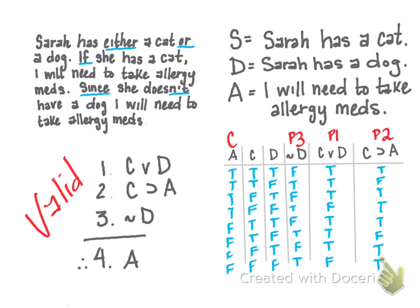And why is this argument valid? Because there is no case, no row, in which all of the premises are true, and yet the conclusion is false. Indeed, if we look carefully, there is no row in which all of the premises are true in the first place. So we know that there will never be a case where the premises are all true, and yet the conclusion is false. So this argument is valid.